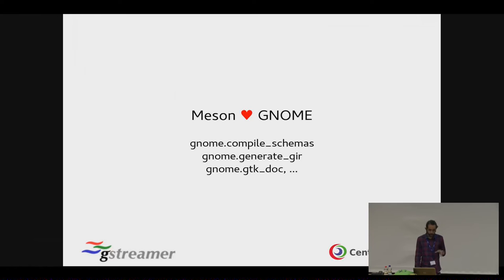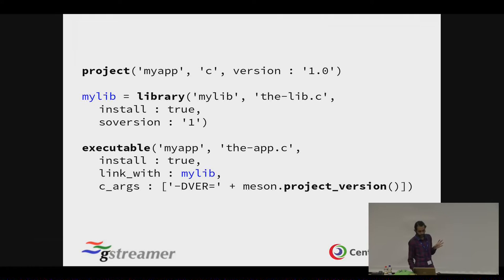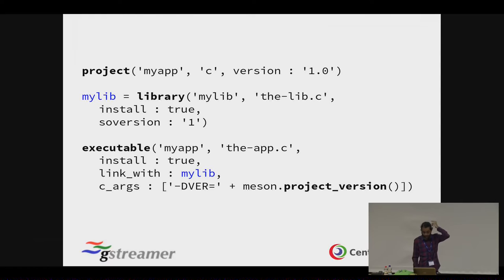Beyond what is specific for GNOME, Meson is built from the ground up to be usable. The build file syntax is readable, it's inspired from Python. Unlike something like CMake, it tries to give you a format similar to either Python or C and makes you feel good while reading it. Here's an example — a very basic Hello World program. You have a library which you want to link to an application, and this is all you need. Really simple. You have keyword arguments, all strings are in single quotes, so you don't have any weird escaping issues.